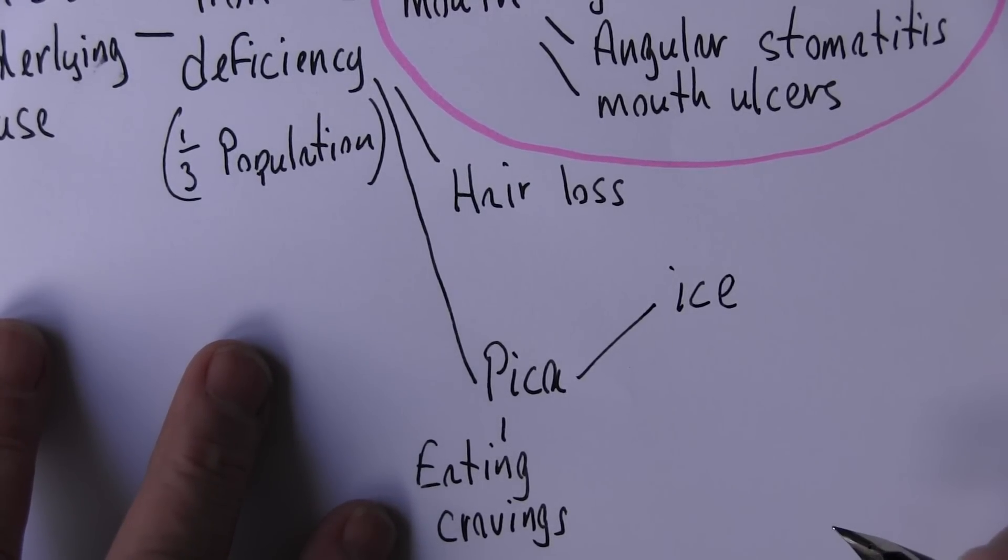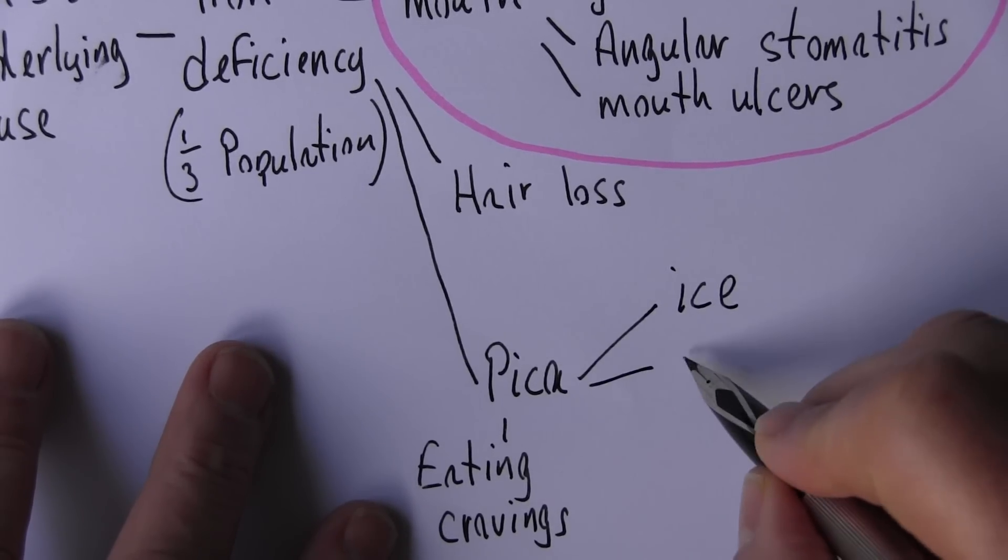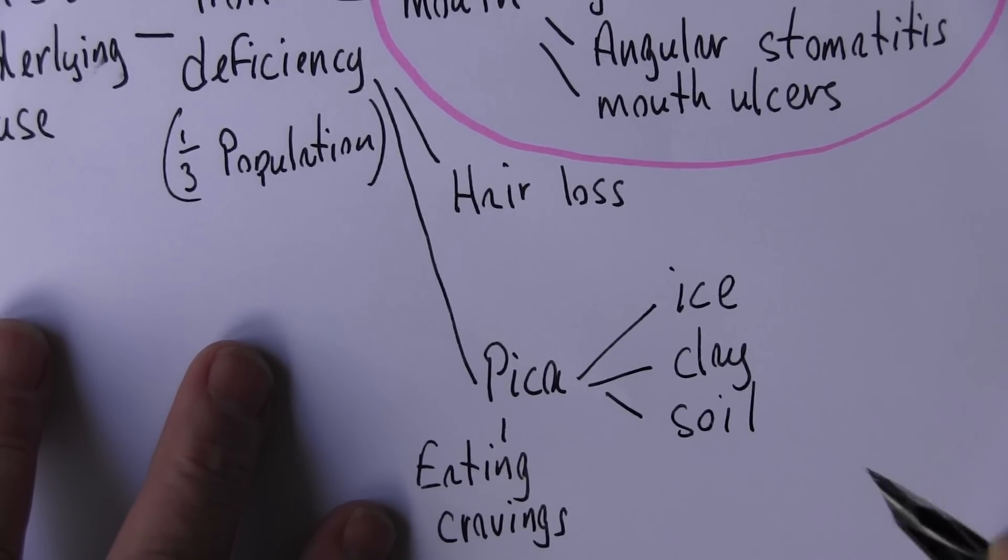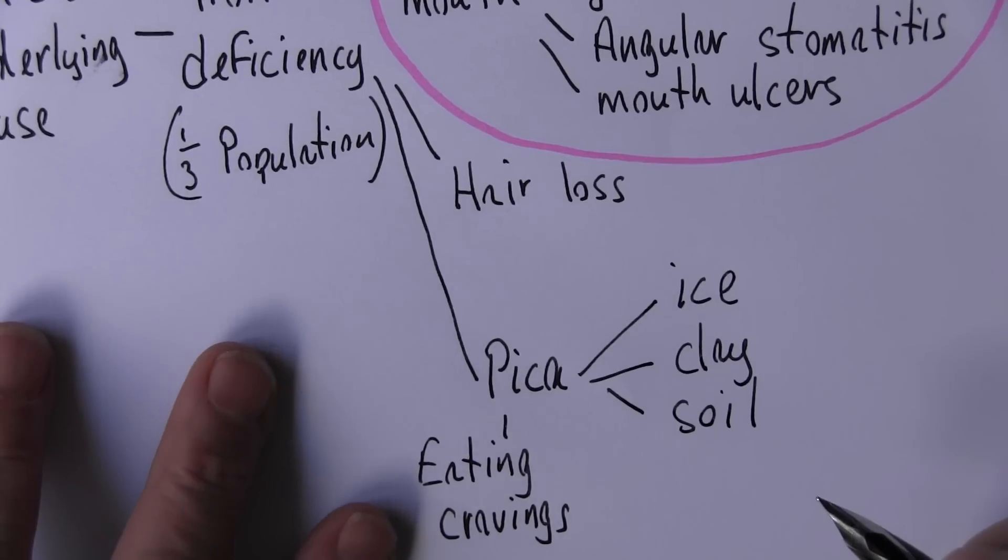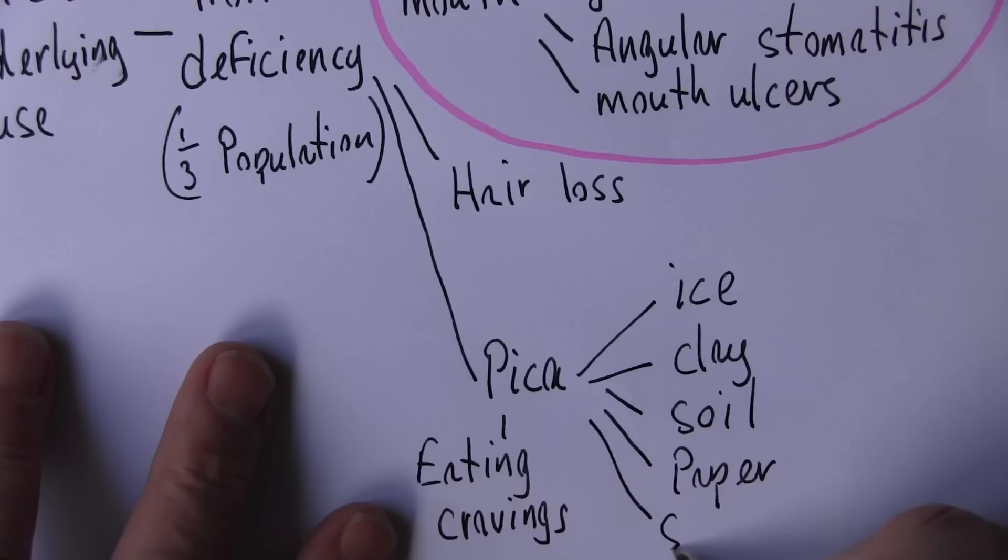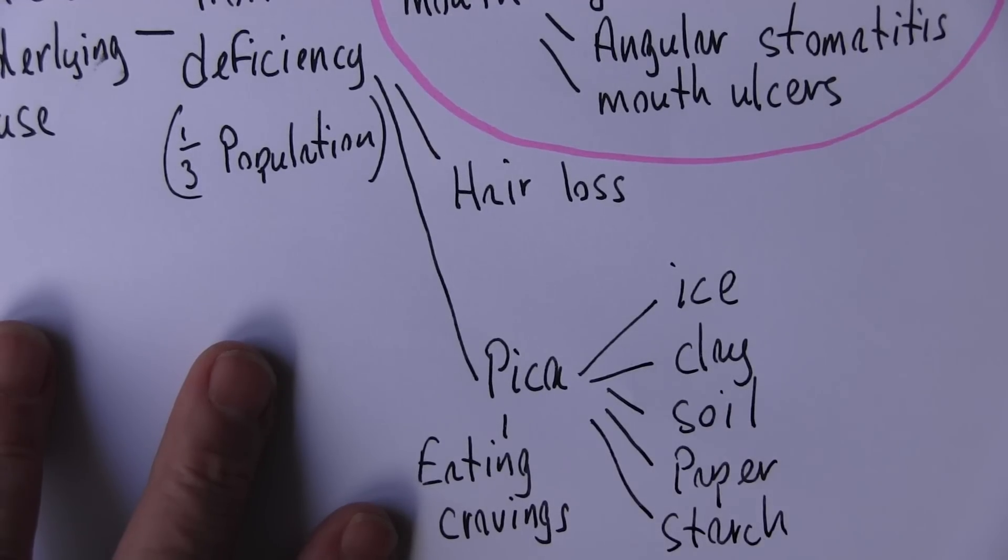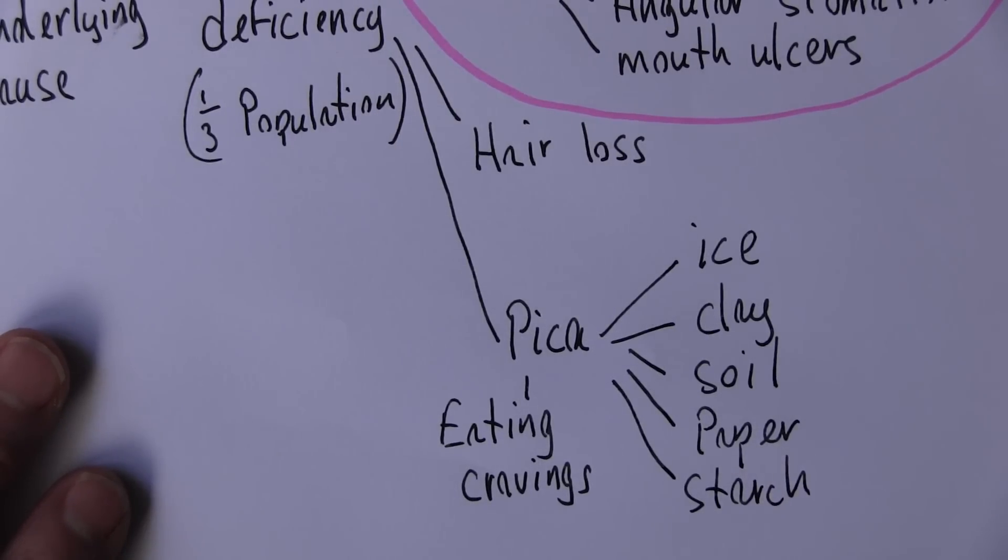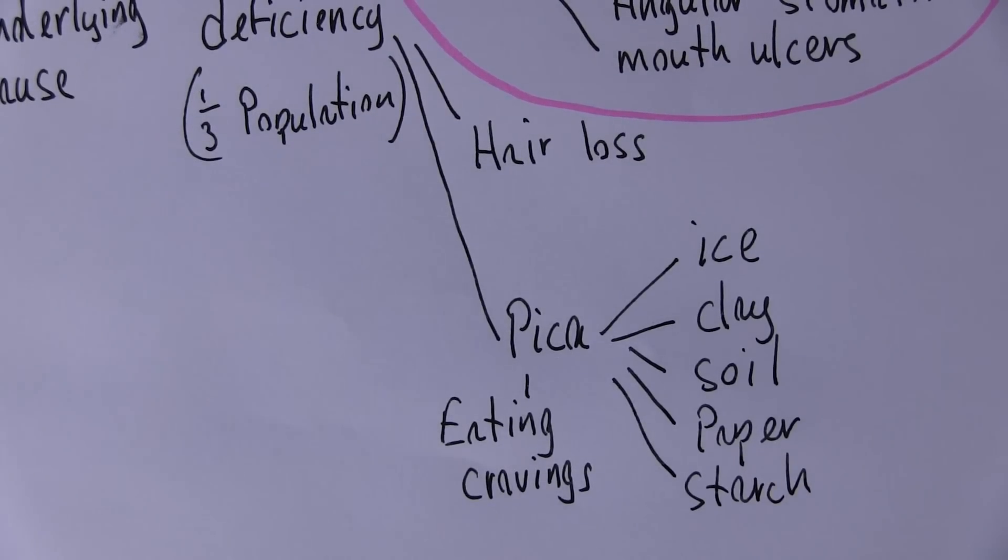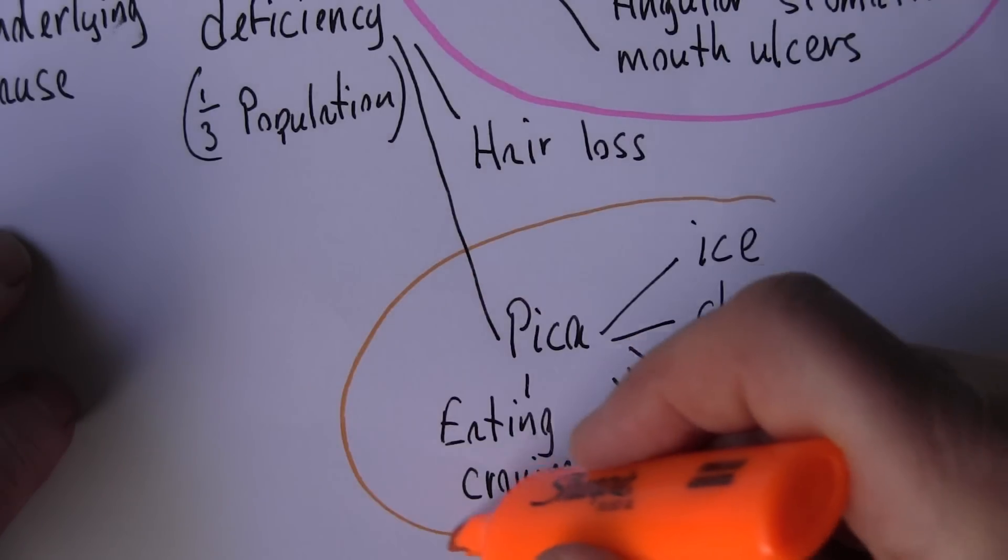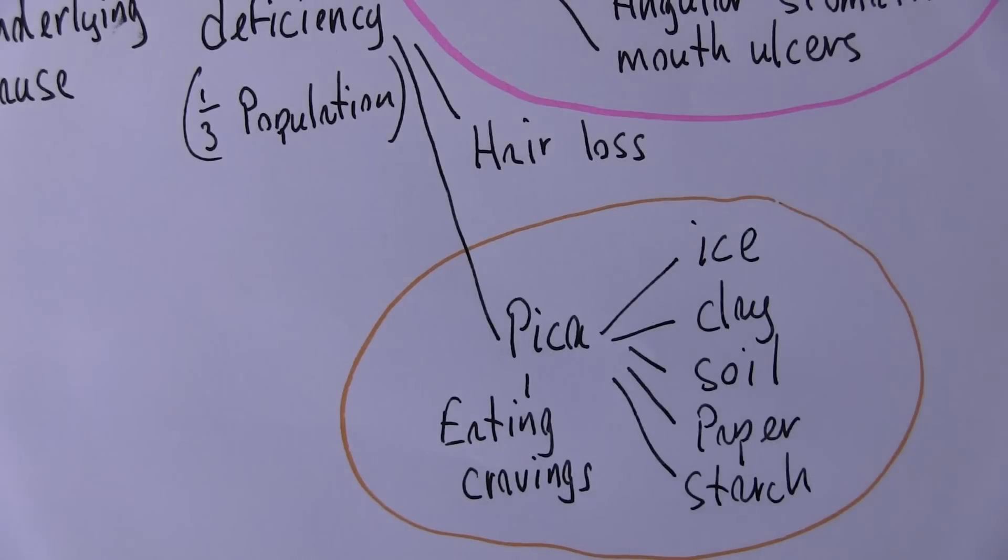So people have a craving for ice. They'll suck ice and they'll eat ice and take ice drinks. And then ridiculous things like clay, soil. They'll have a craving to eat these things. Sometimes paper, starch, pebbles. Very strange. But a feature of iron deficiency anemia. So that's another sort of subset of features of iron deficiency.